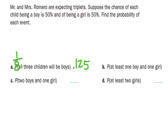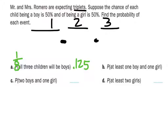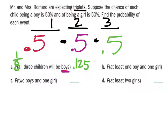Another way we can look at this: we have to look at how many children there are going to be. Triplets would be three children. So we're going to multiply these together. What are the chances that the first child is a boy? That's 50% — I'm just going to write this as a decimal. What are the chances the second child will be a boy? 50%. And the third child will have a 50% chance of being a boy. So if we multiply those together, we get the same answer.